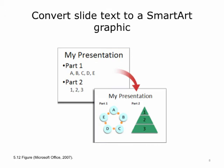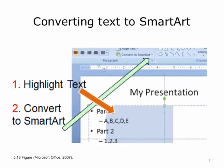SmartArt graphics are a new way to add visual interest to your text by converting your bulleted list to a graphic. To convert a block of text in your slide to SmartArt, first select the Insert tab, then select the text, and then select the appropriate design to enhance the meaning of your text.